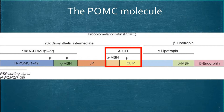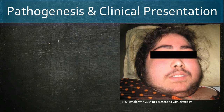Looking at the other derivatives of POMC, there is gamma and beta-MSH on the left and right-hand sides. However, alpha-MSH is the most important melanocortin in hyperpigmentation. The ability of cortisol to react with androgen receptors at high enough concentrations also results in hirsutism and hypertrichosis.